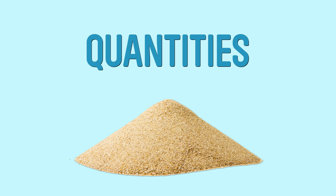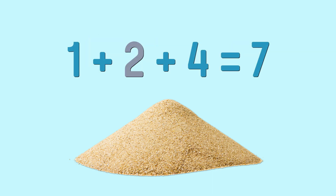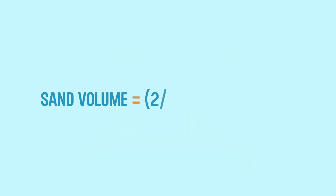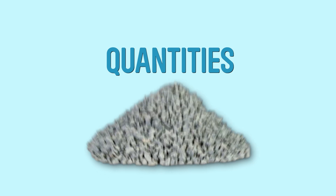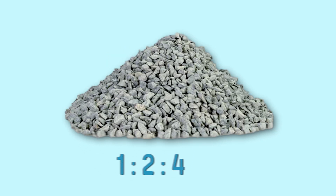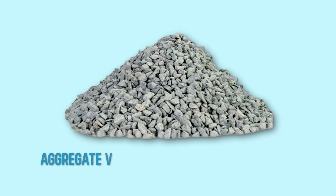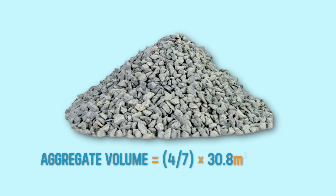For sand, it's 2 parts out of 7, so the sand volume equals 2/7 × 30.8 cubic meters, which totals 8.8 cubic meters. For gravel (aggregate), it's 4 parts out of 7, so the aggregate volume equals 4/7 × 30.8 cubic meters, which totals 17.6 cubic meters.